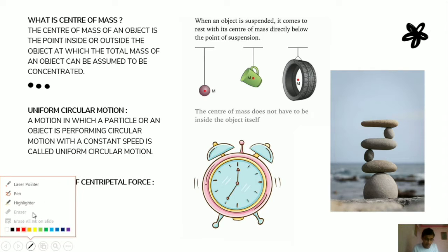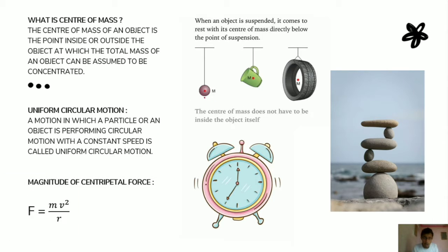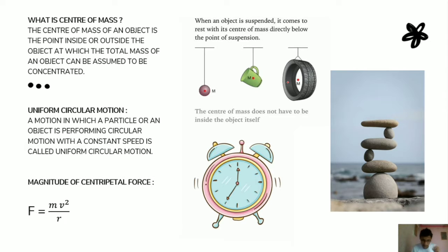There are three figures here. In the first figure there is a spherical ball — a sphere — and the center of mass of that particular sphere is at the centroid of the figure. The center of mass of a cup shape is also inside the cup. Then the center of mass of this tire is also given — you can see that this center of mass is the centroid of this particular cylindrical tire.